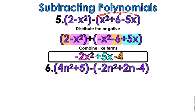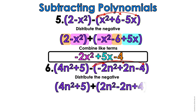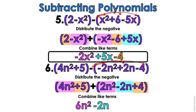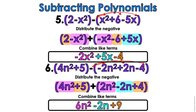For number 6, you can pause the video and try on your own. We're going to distribute this negative — change all the signs. Once all the signs are changed, we combine our like terms just like before. n-squared, 4n-squared, 2n-squared gives us 6n-squared. Just an n, negative 2n. And 5 plus 4 is 9. You have finished example 6 out of 10.